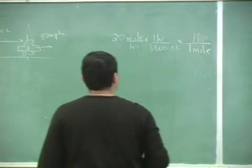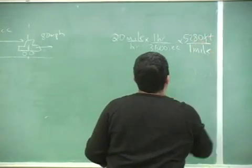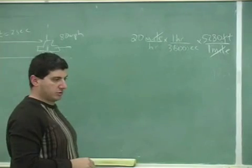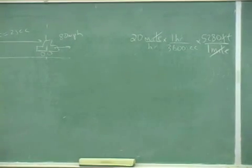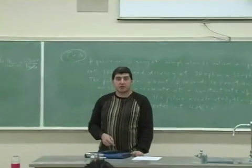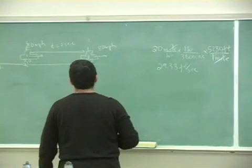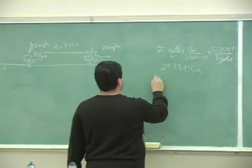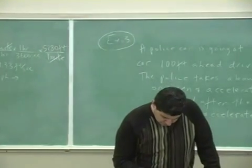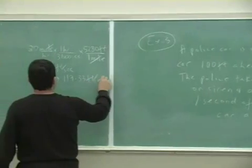One mile is 5,280 feet. So 20 mile an hour is going to equal 20 times 29.33 feet per second. That's the police's speed. And then 80 mile an hour is going to equal, well I could just multiply that by four, 117.33 feet per second.